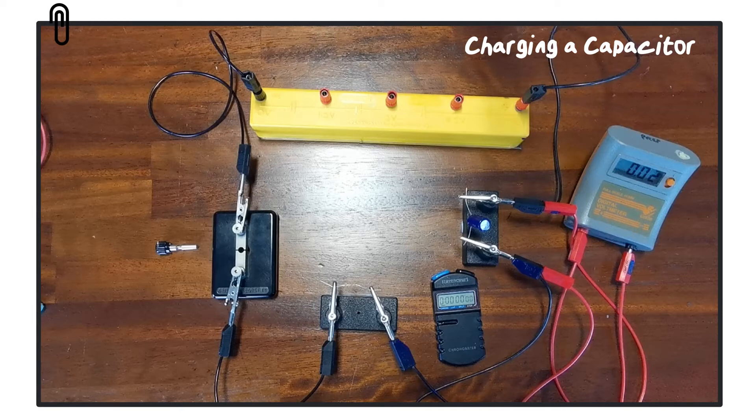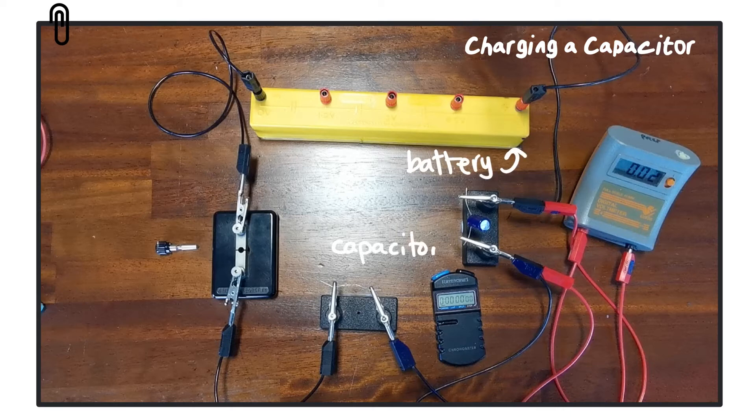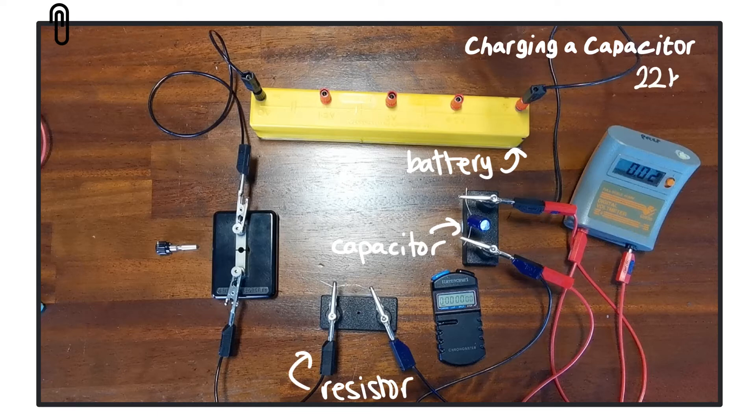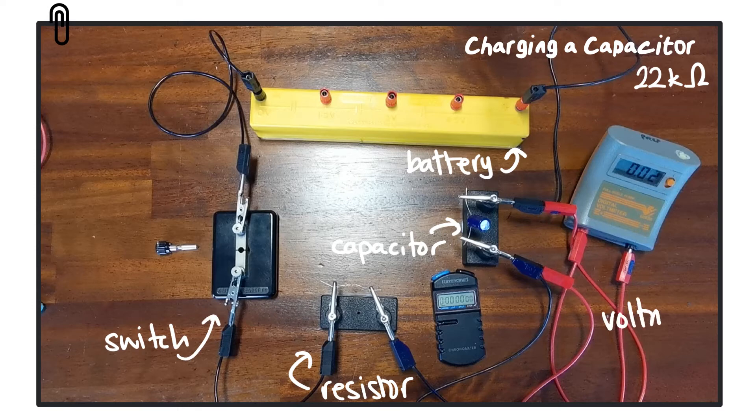For this experiment we are going to need a battery, a capacitor, a resistor - in this case this is a 22 kilo ohm resistor - a switch, a voltmeter and a stopwatch. And we're going to set those up as shown here in the diagram.